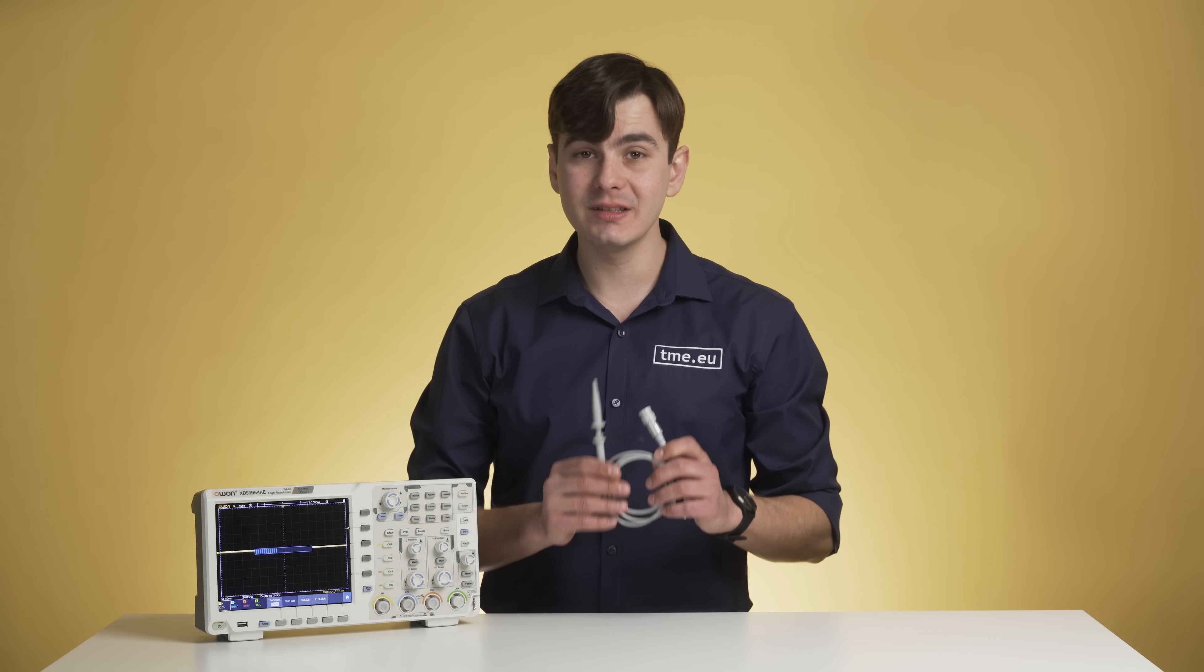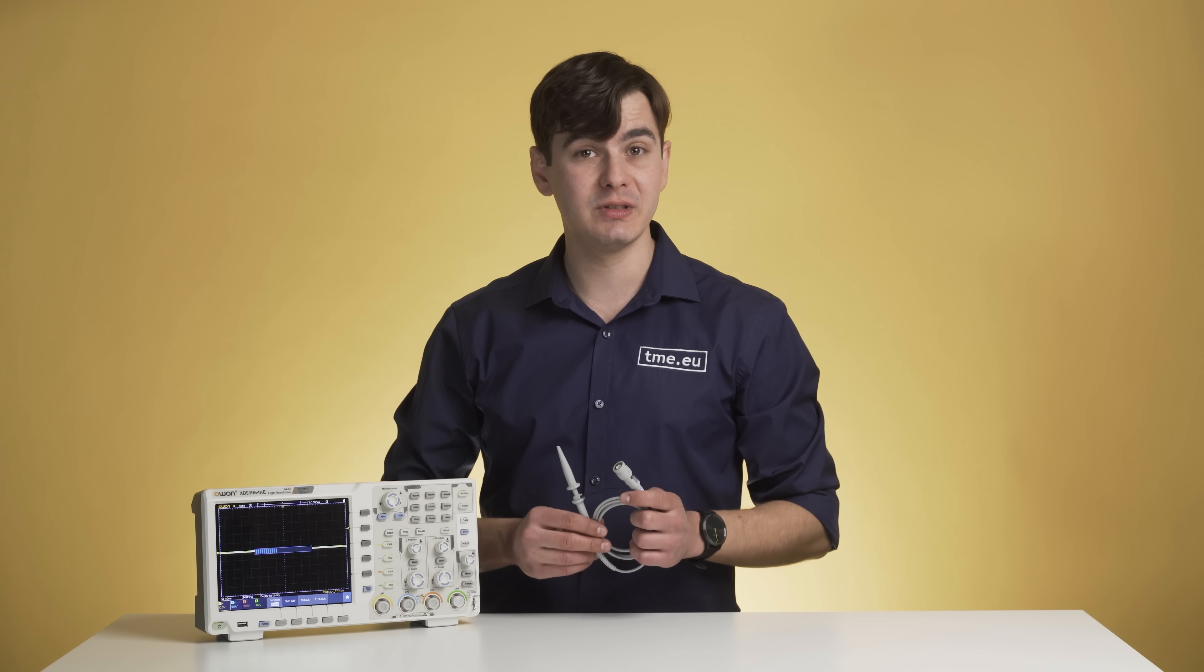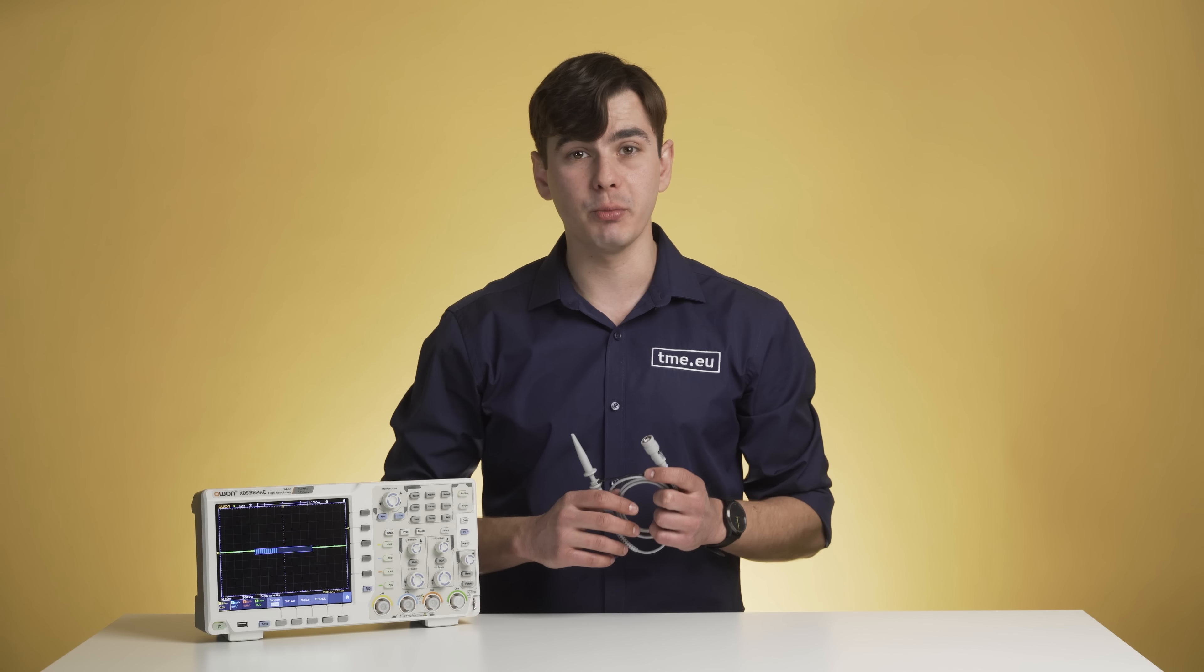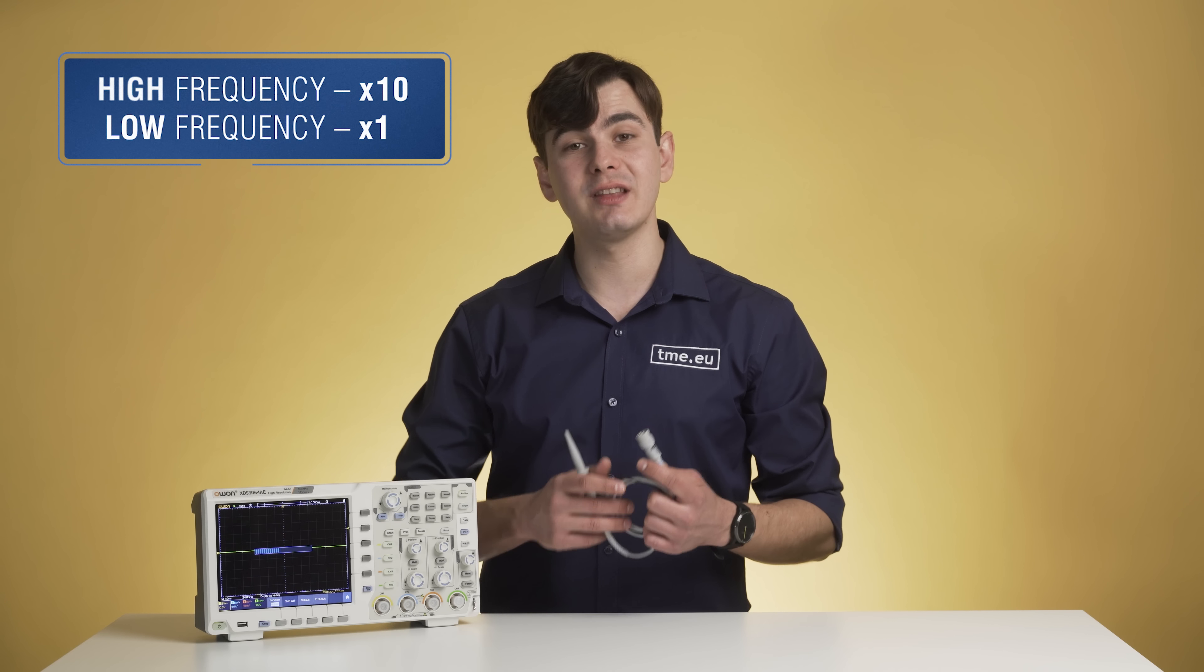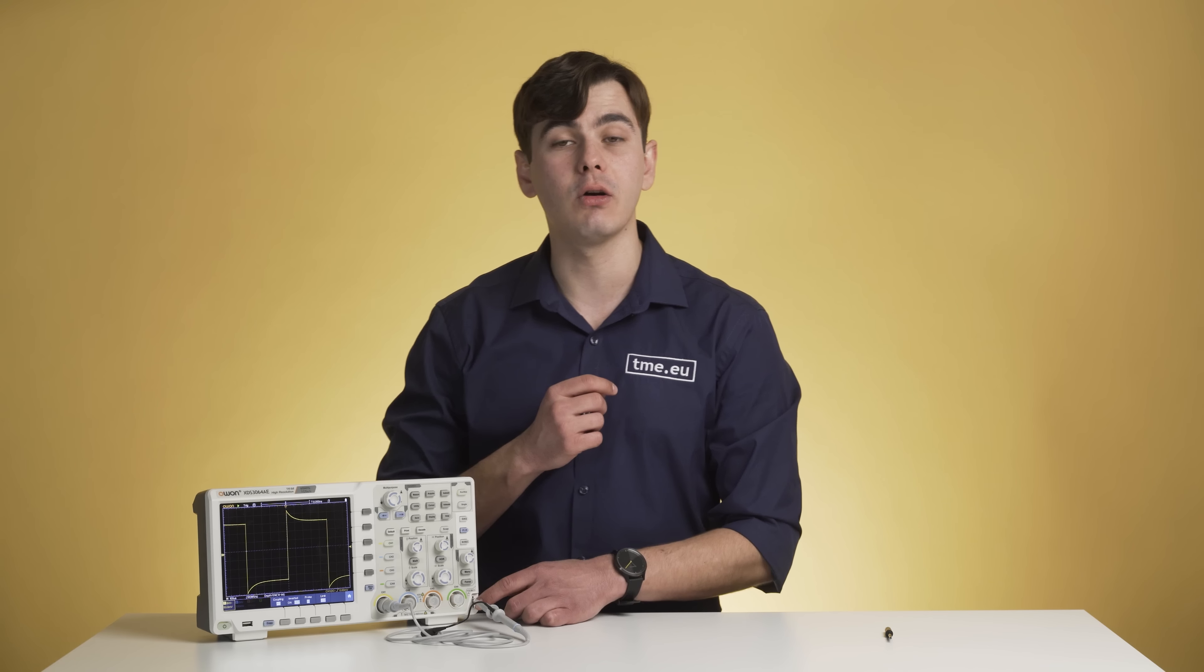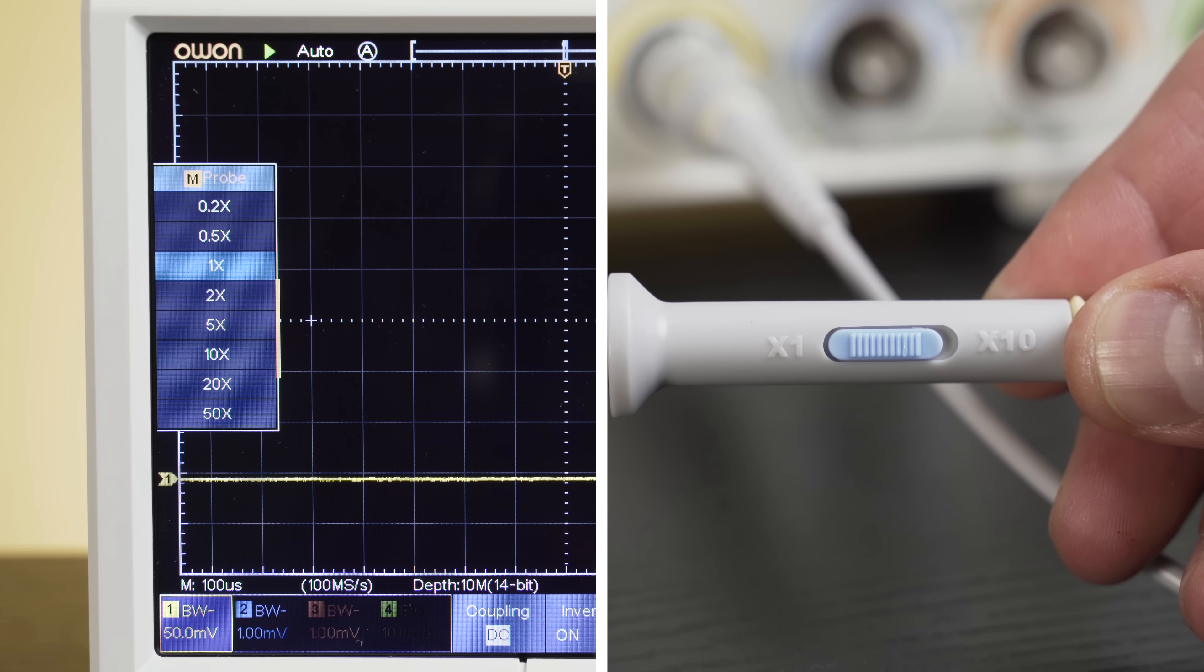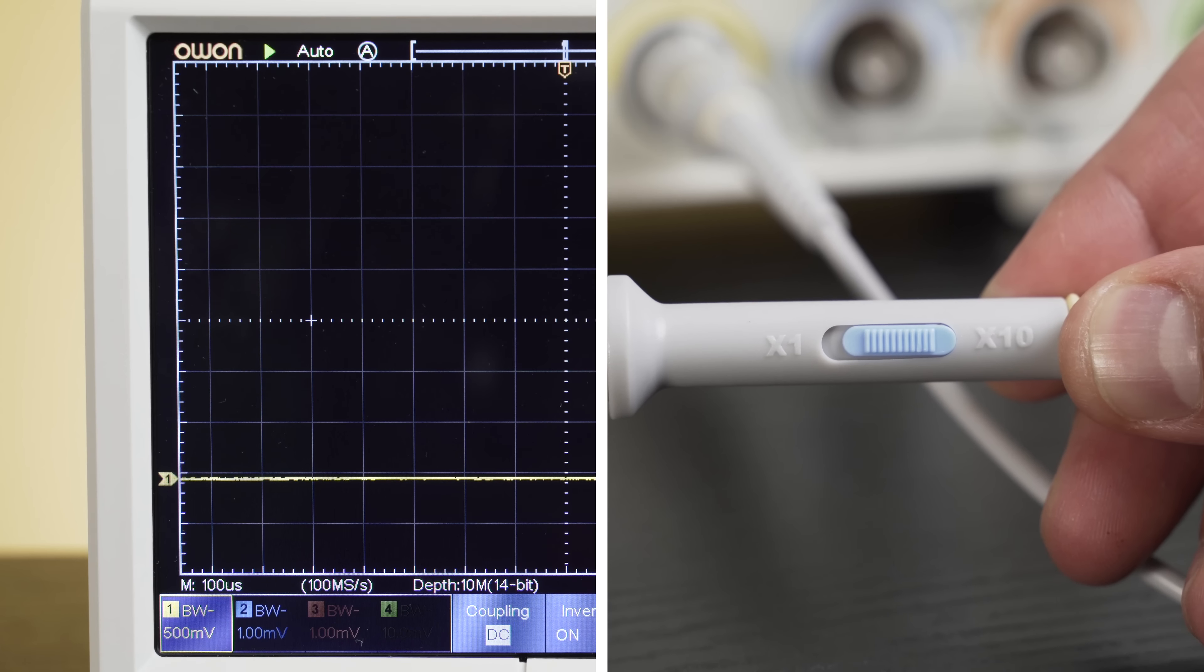Here we have a pretty standard passive probe x1 x10 that comes together with the oscilloscope. For higher frequencies use the x10, and for low frequencies low voltages use the x1. Once again we're going to use the internal function generator of the scope. Connect one side of the probe to the main channel and the other side to the two pins that are on the sides. Make sure probe attenuation matches the one on the scope settings.